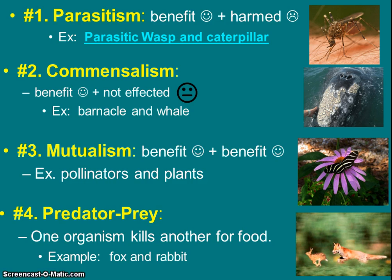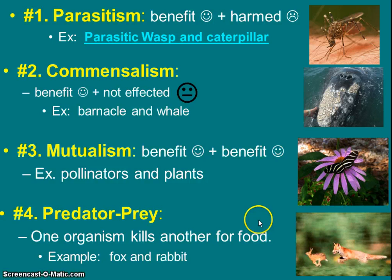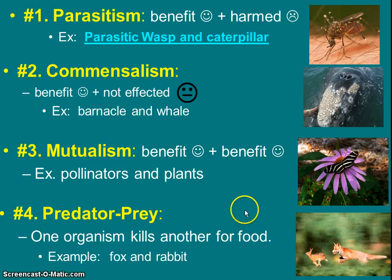Last but not least is a predator-prey relationship. Here we have a fox chasing a bunny. One organism is going to kill the other, and the other one is food. If we were to add smiley faces, one would be happy and the other not — and even worse than parasitism, because you survive a mosquito bite, but here the bunny is going to be dead. We'll practice this by looking at more examples next class and identifying the types.